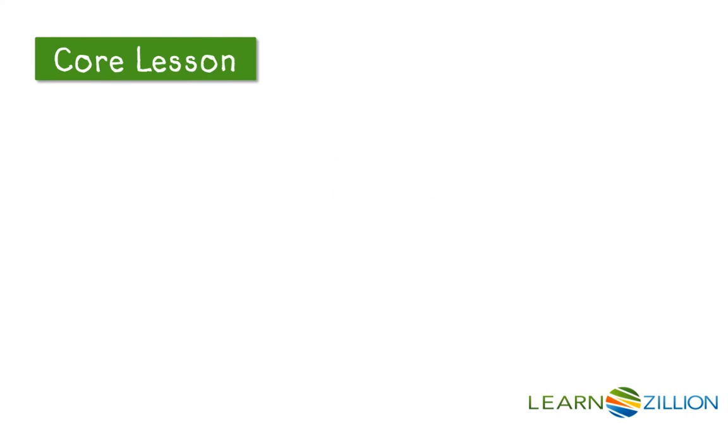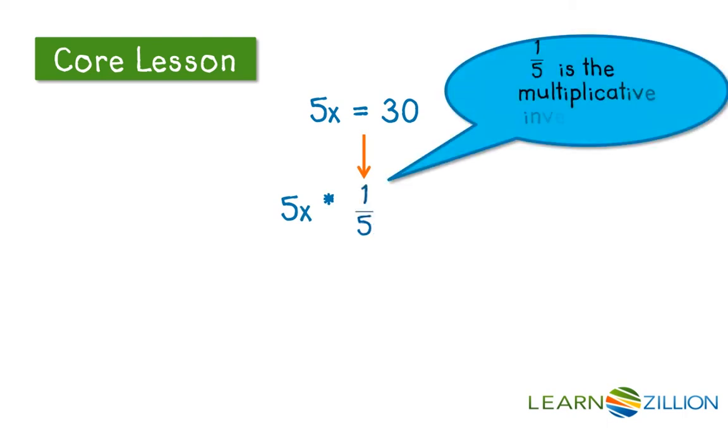Let's look at an example here. 5x equals 30. Now remember, my goal is to isolate x, and we can do this by using a multiplicative inverse. So we would want to think, what's the multiplicative inverse of 5? We know that 1 fifth is the multiplicative inverse of 5. So we're going to multiply both sides of our equality symbol by the same thing, therefore maintaining equivalency. And when we carry out that operation, we get x equals 6.